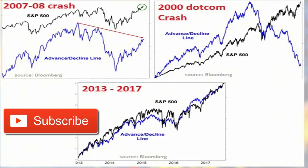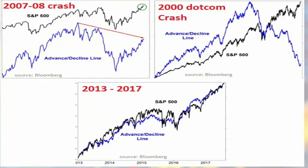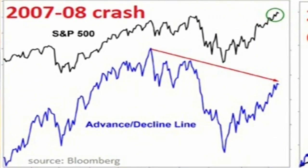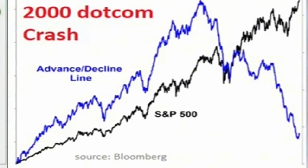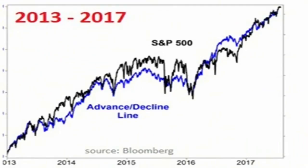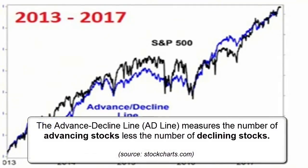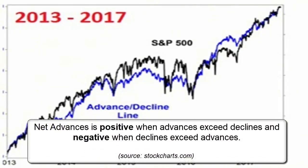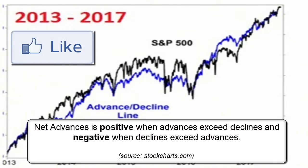One of them is something that maybe people haven't really paid attention to — it's called the advance-decline line. If you take a look at these three charts, I've got the 2007-2008 crash up there at the top left, the 2000 dot-com crash on the top right, and where we are right now between 2013-2017. The blue line on the chart is the advance-decline line, which is a market breadth indicator showing the health of the market. And the black line is the S&P. Think of the advance-decline line as sort of the way a doctor would measure your temperature.